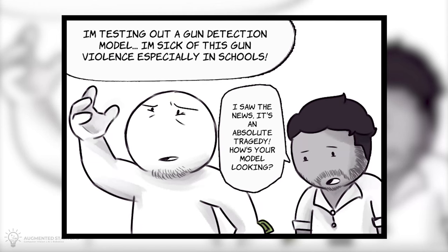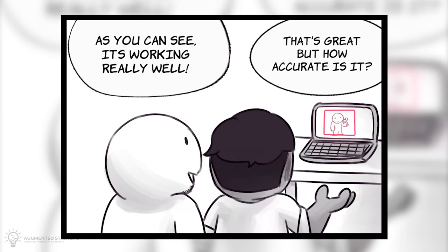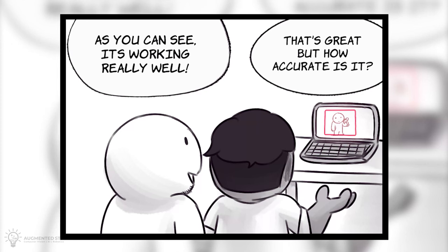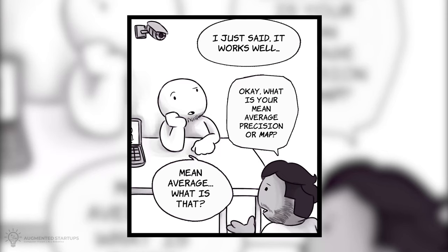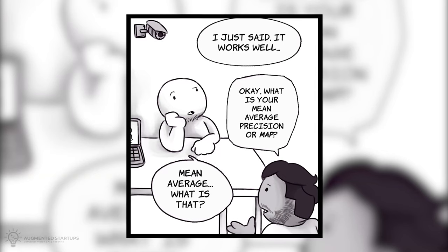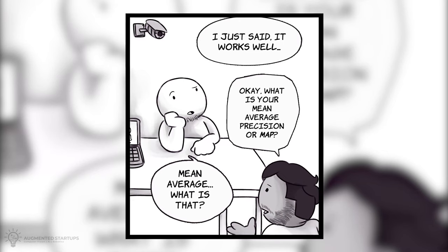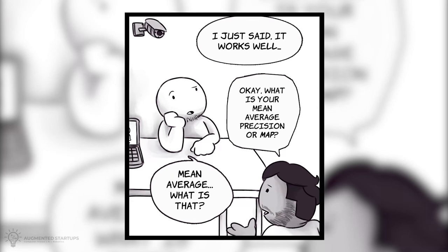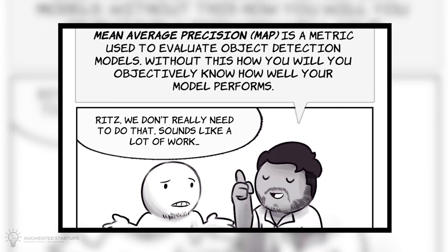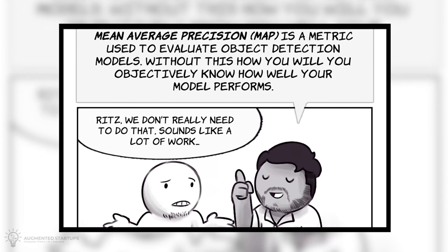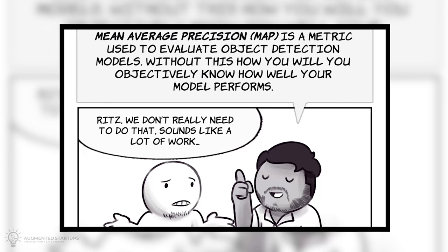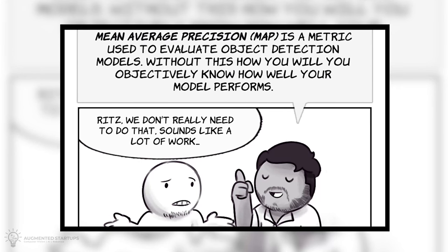How's your model looking? As you can see, it's working really well. That's great, but how accurate is it? I just said it works well. Okay, what is your mean average precision, or MAP? Mean average? What is that? Mean average precision is a metric used to evaluate object detection models. Without this, how will you objectively know how well your model performs?